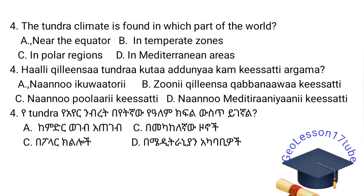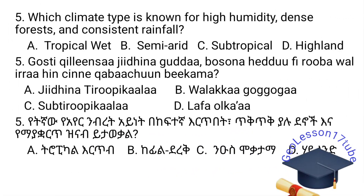Question number four: The tundra climate is found in which part of the world? It is found in the polar regions. The correct answer is C.